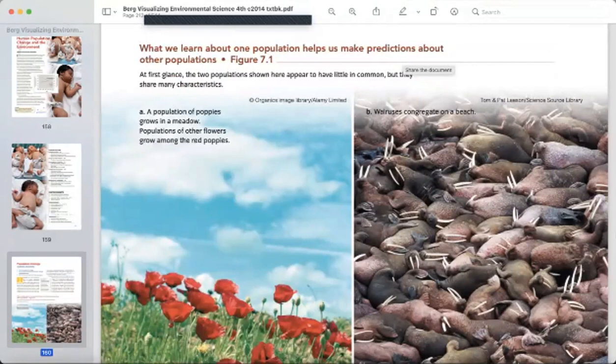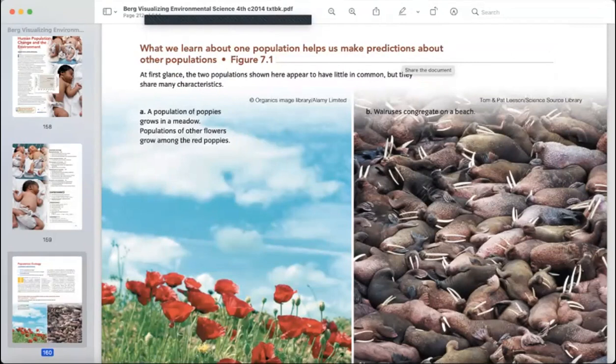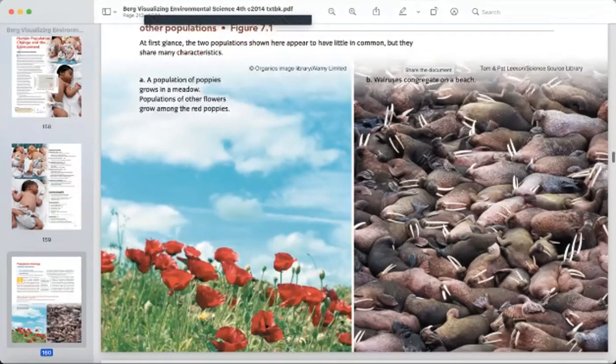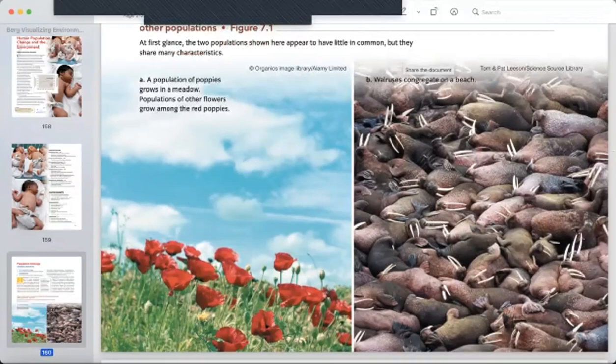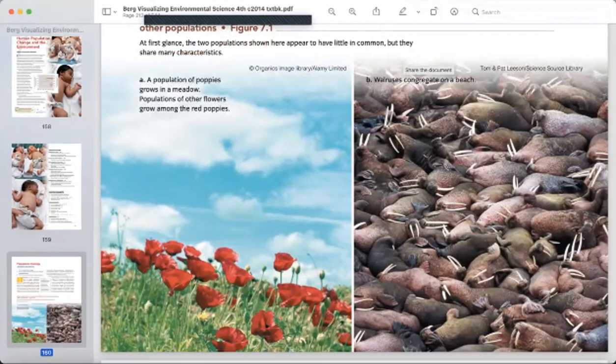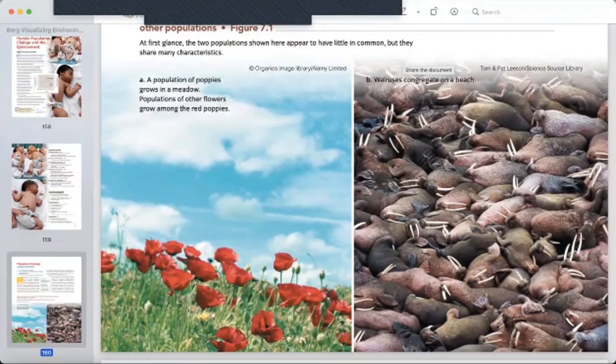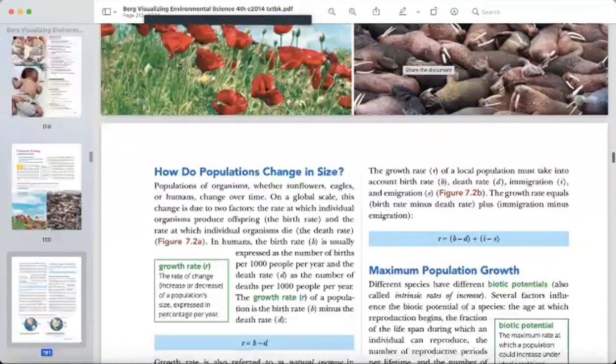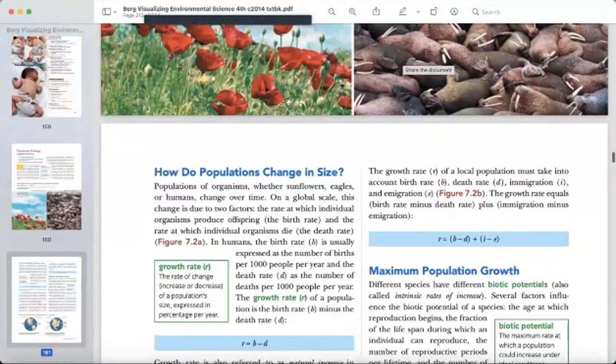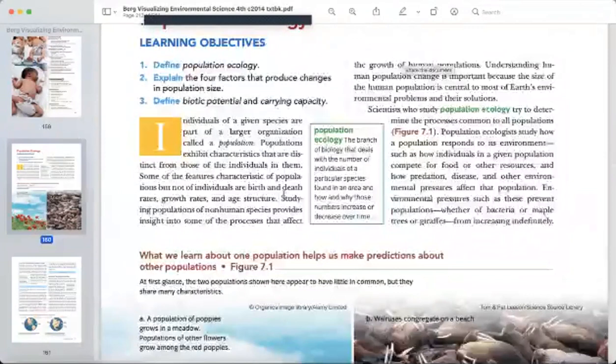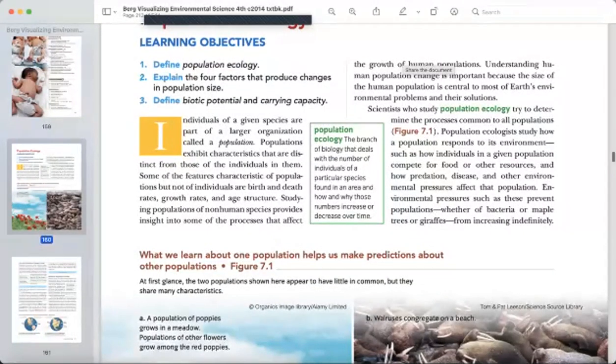So figure 7.1. What we learn about one population helps us make predictions about other populations. At first glance, the two populations shown here appear to have little in common, but they share many characteristics. Number one, a population of poppies growing in meadows, populations of other flowers grow among the red poppies. Then wolverines, cormorants on a beach. And they are in so much quantity that they can be all around the beach. Now I don't want to explain or go into detail of why all this is happening. So I would like you to read this portion.